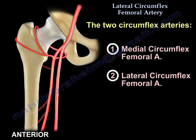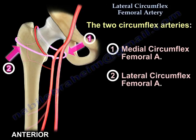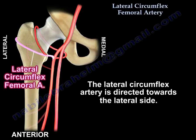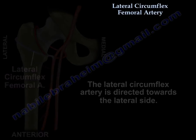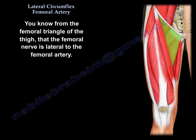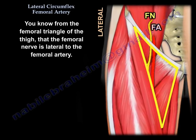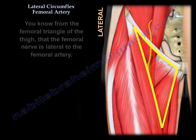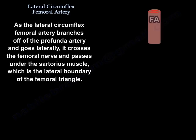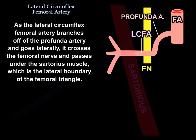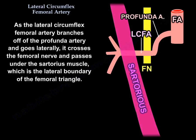The two circumflex arteries are the medial femoral circumflex and the lateral femoral circumflex artery. The lateral circumflex artery is directed to the lateral side. From the femoral triangle, the femoral nerve is lateral to the femoral artery, so as the lateral circumflex femoral artery branches off the profunda and goes laterally, it crosses the femoral nerve and passes under the sartorius, which is the lateral boundary of the femoral triangle.